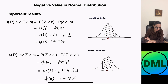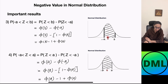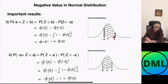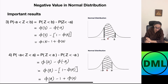Probability of Z greater than minus A, less than B — this value is negative and this value is positive. We will first plot on the normal distribution curve the value minus A and B. Because this is negative, it will be on the left hand side of that curve. The value minus A will lie here, and B value is positive, so it will lie on the right hand side. I have to find out the distribution in between them. This shaded area will be written as probability of Z less than B minus probability of Z less than minus A.